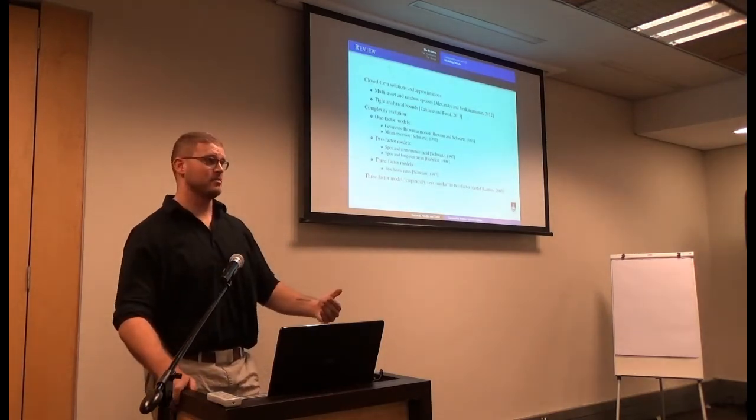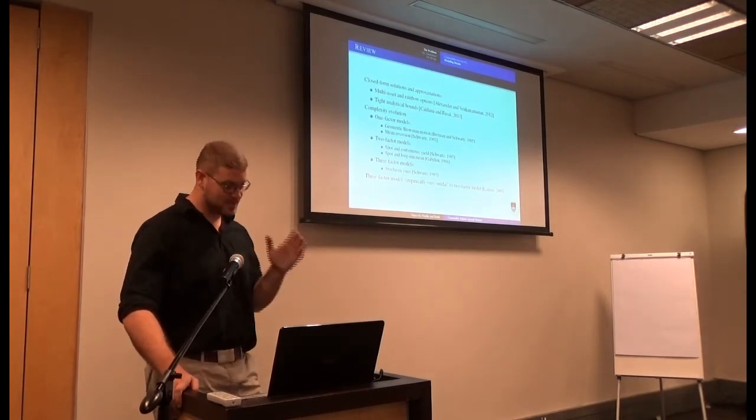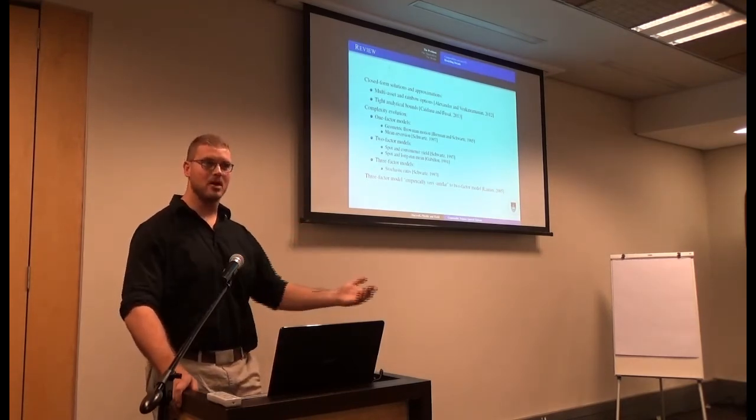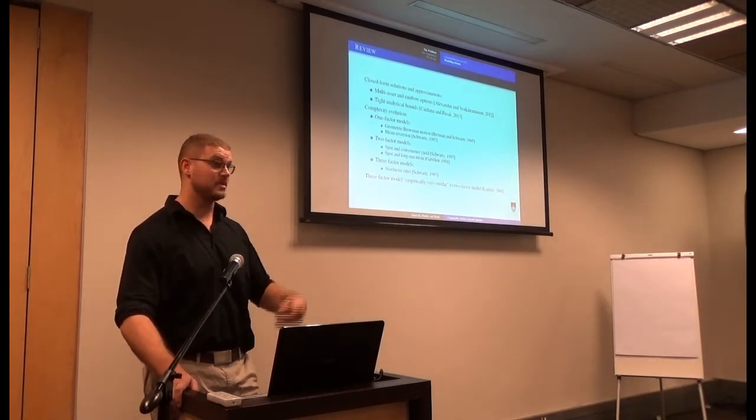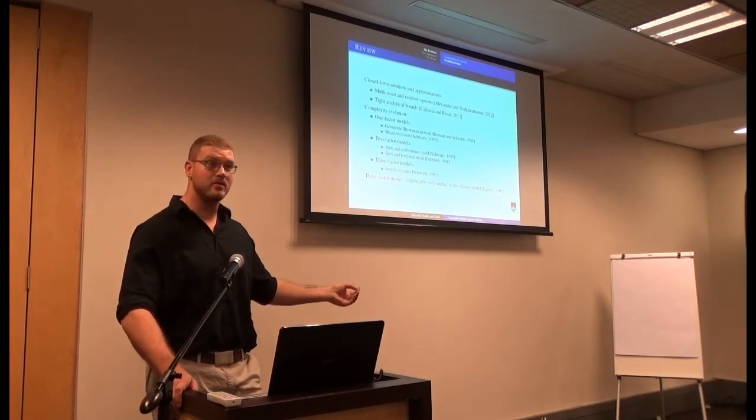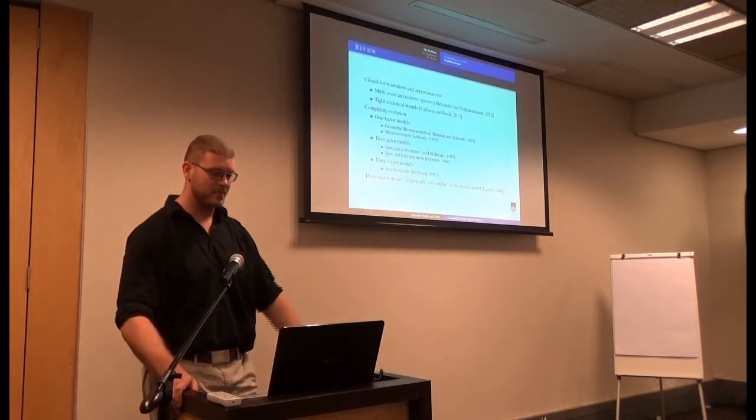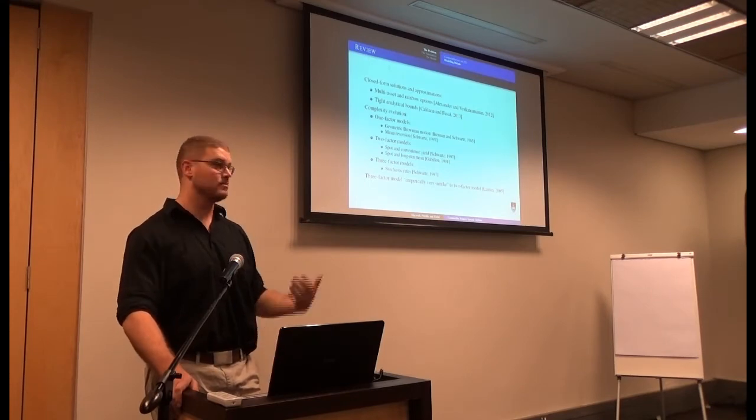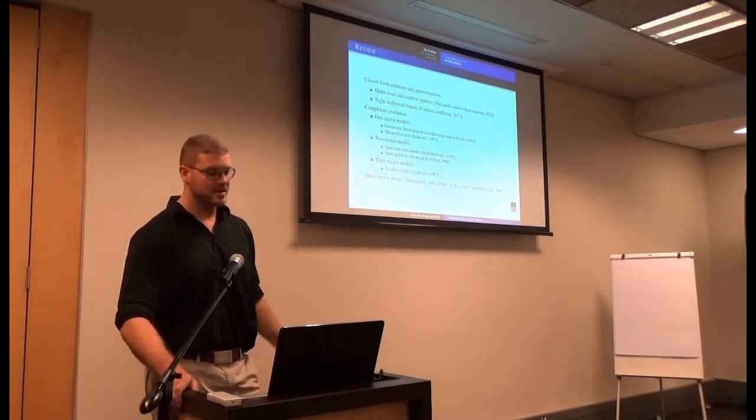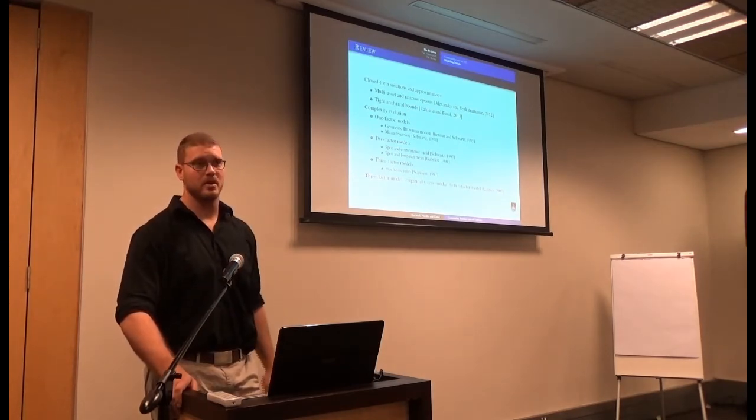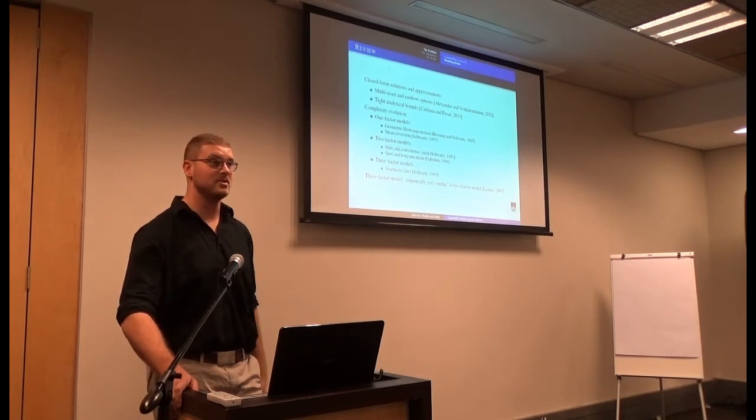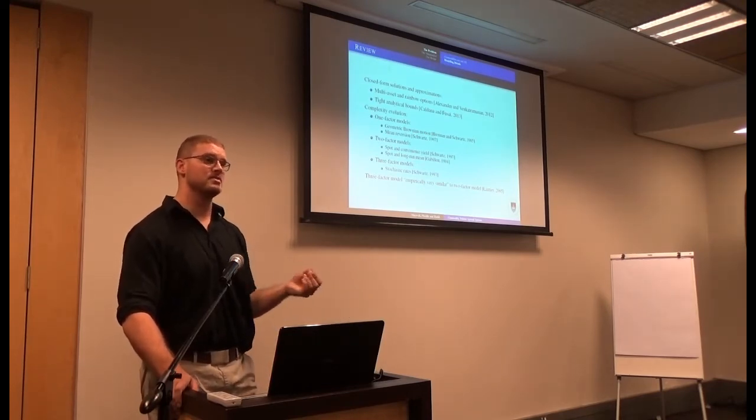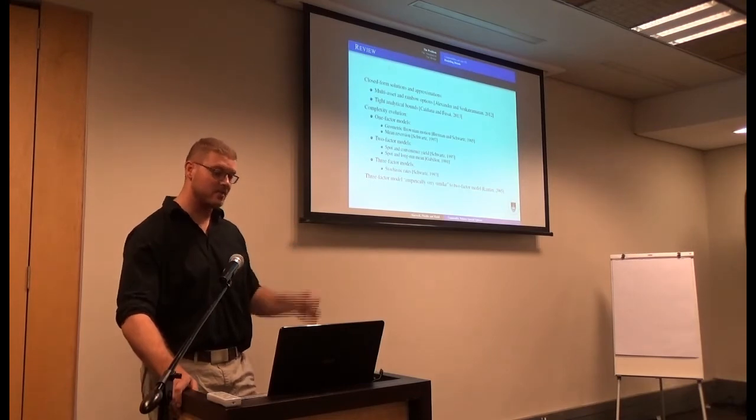The models for commodity markets and the term structure models follow a very typical evolution. We are specifically sticking to the Schwartz end of the stream. He did a lot of the work in commodity modeling. You'd obviously start with geometric Brownian motion, but that captures none of the features. You'd move on to just a simple one-factor mean reversion, so that at least you're capturing mean reversion in your spot. Two-factor models generally are developed along two lines, where the additional factor is either the convenience yield or the long-run mean. And then three-factor models, the obvious third factor to add is stochastic rates. Latia shows in 2005 that over the short and medium term, this three-factor model proposed by Schwartz is empirically very similar to the two-factor model. At that point, we were confident to proceed with the Schwartz two-factor model, simply because we have a better intuitive understanding of what the convenience yield is and how we expect it to behave as compared to the long-run mean.